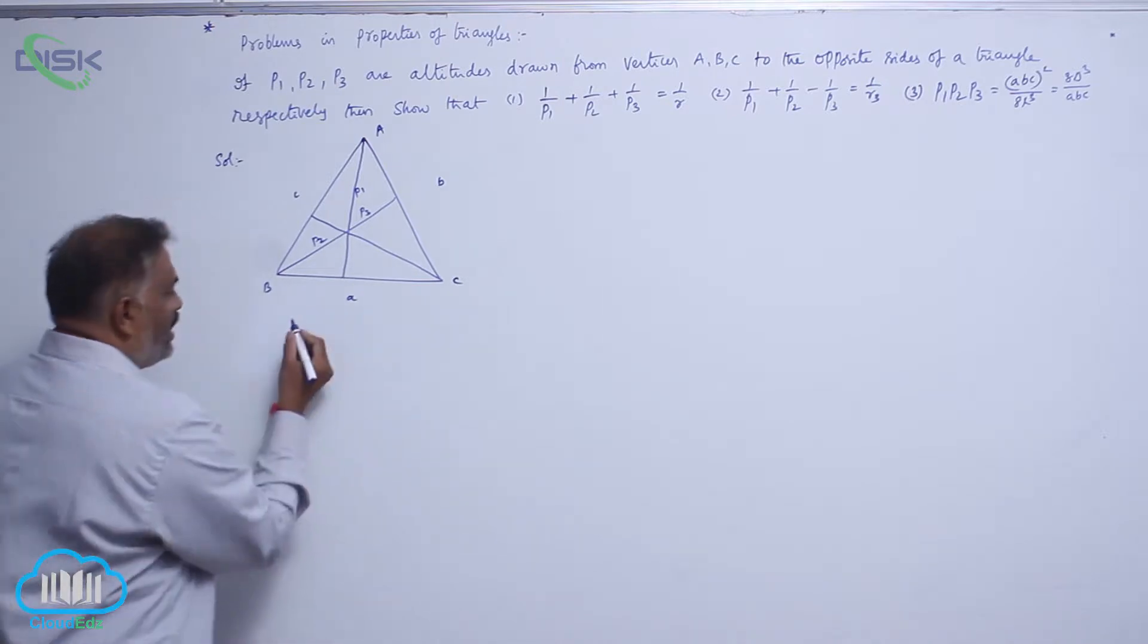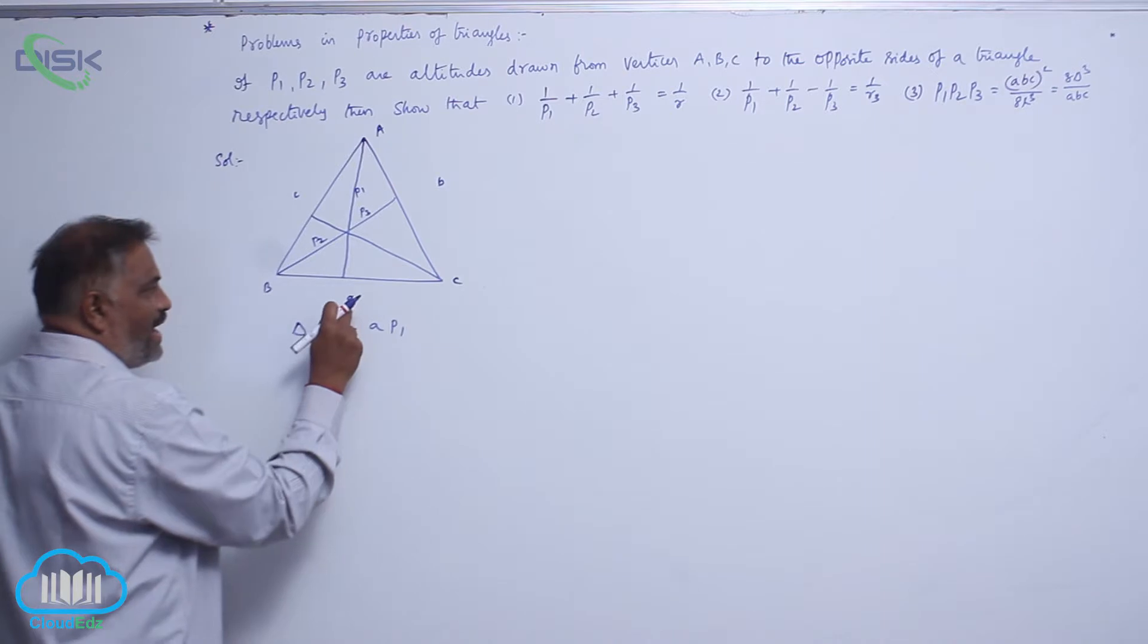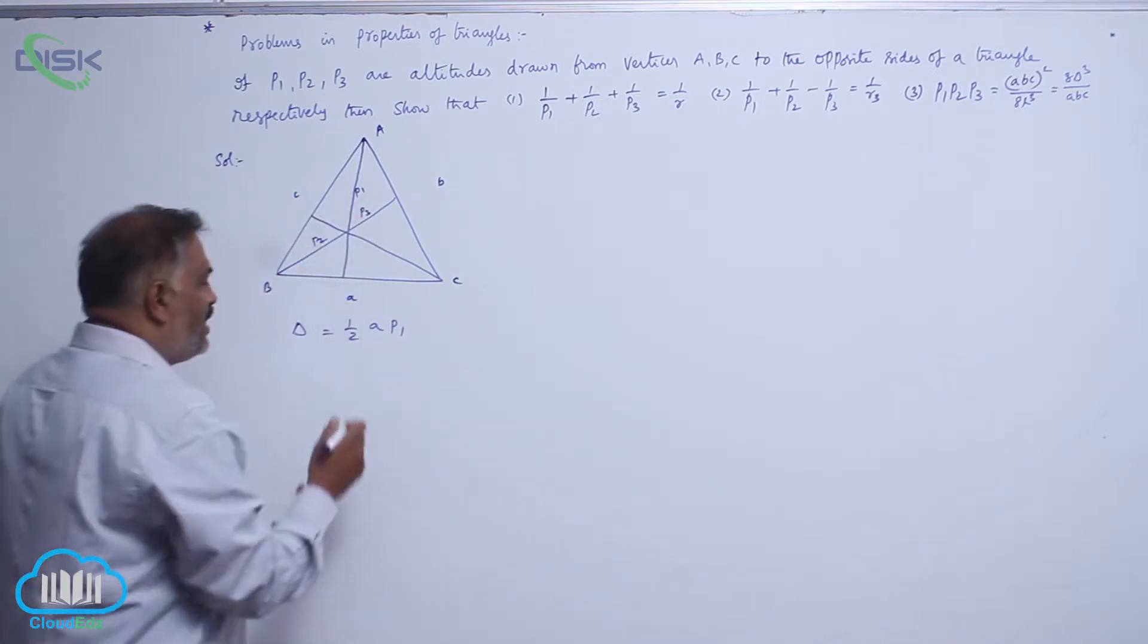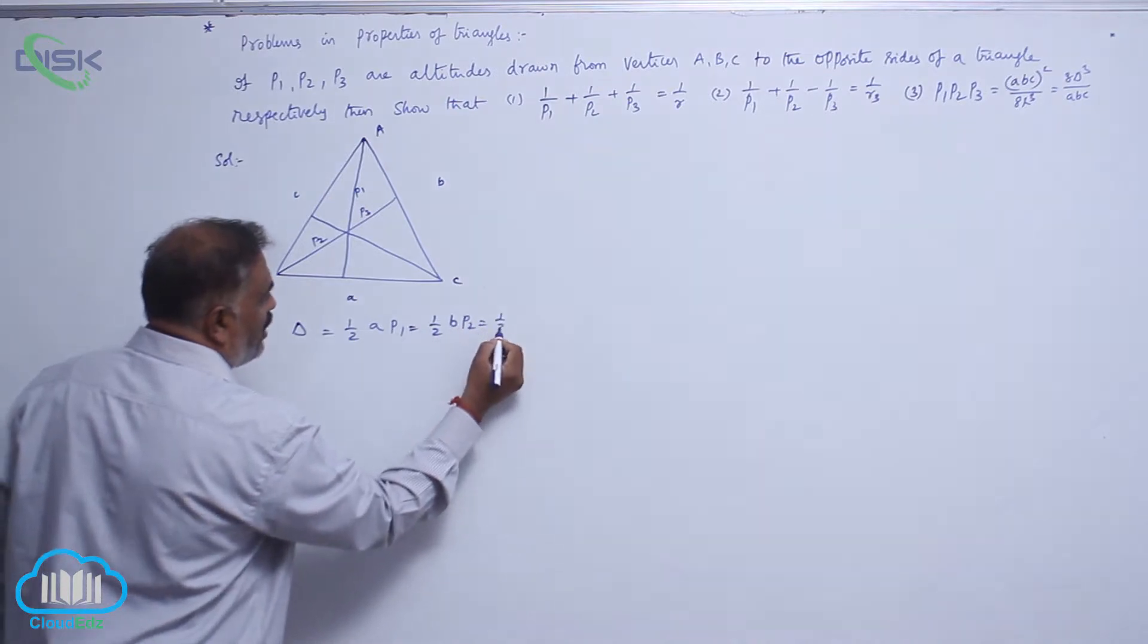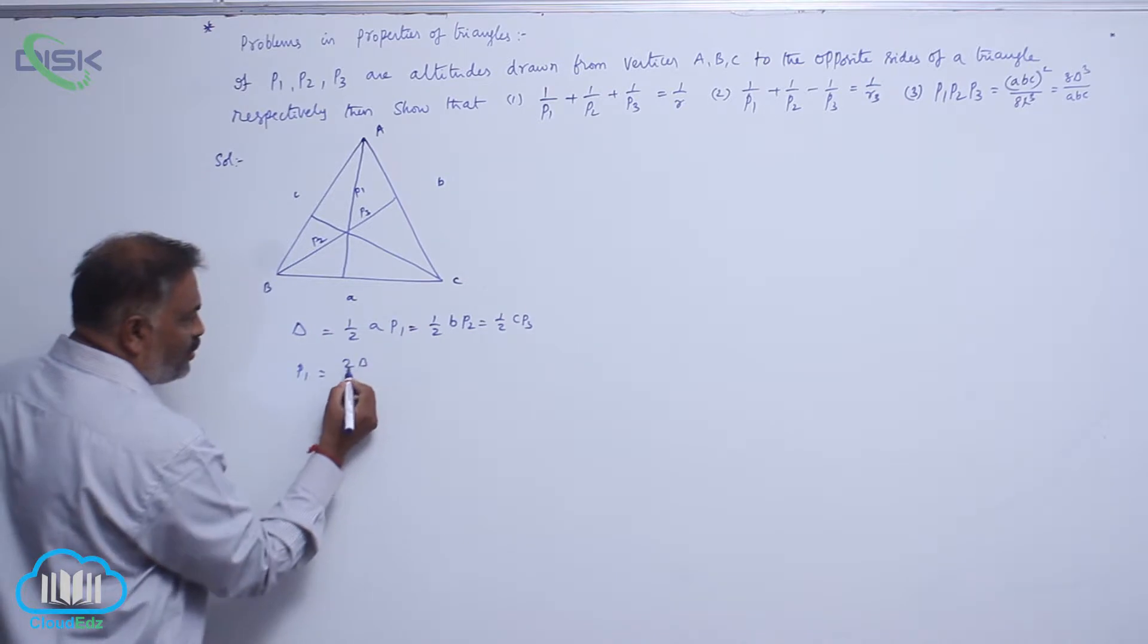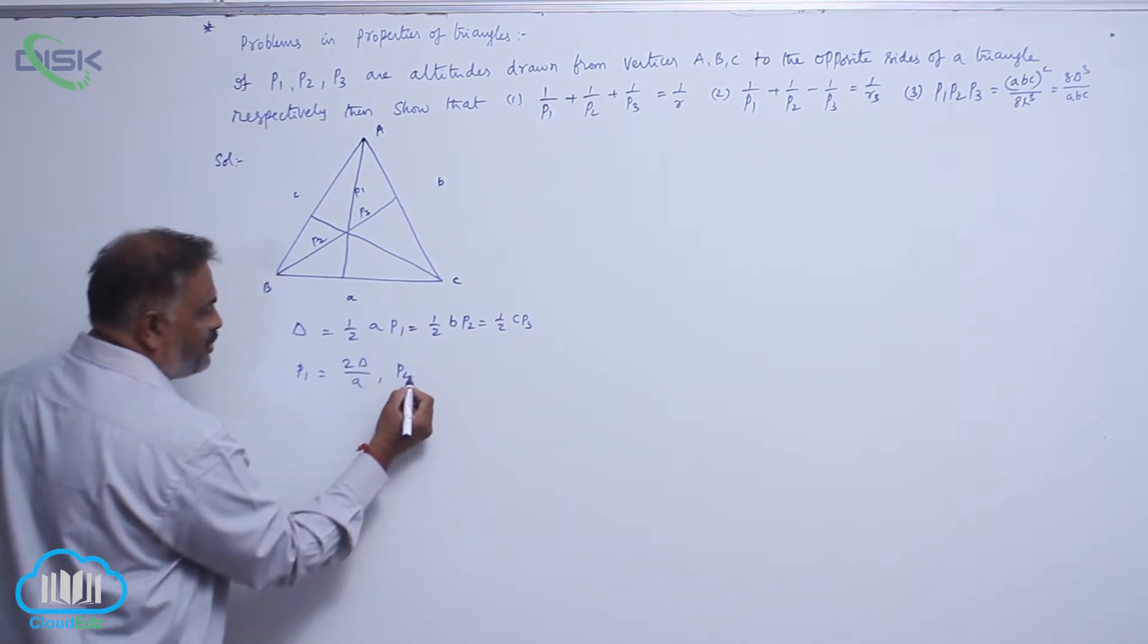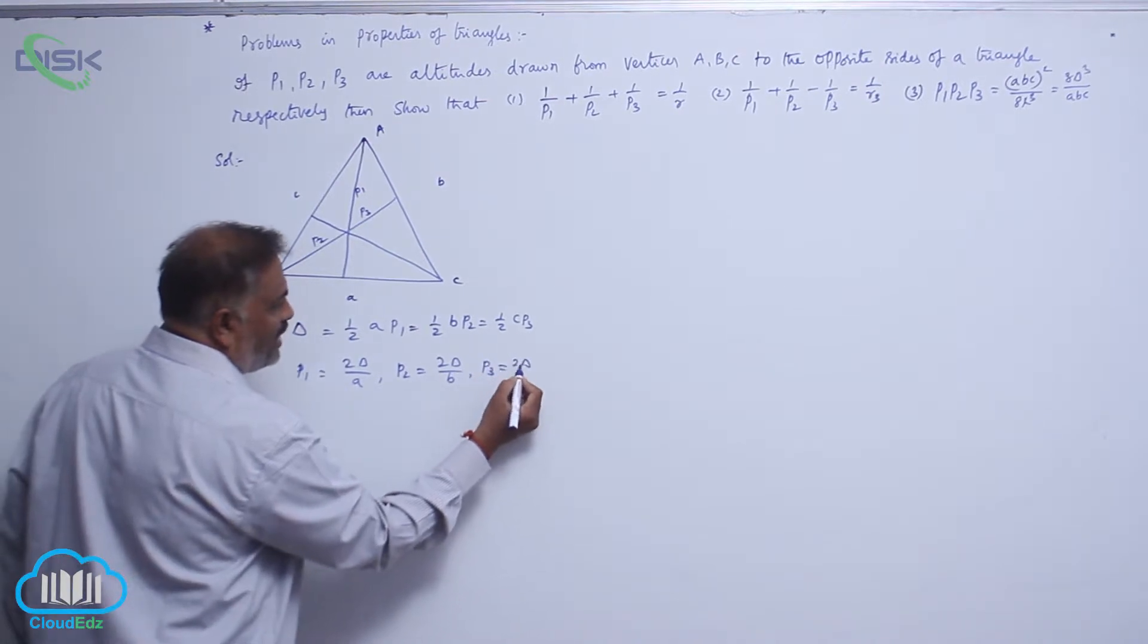We know that delta is equal to half A P1. If A is the base, P1 is the height, equivalent to half B P2 equals half C P3. This implies P1 equals 2 delta by A, P2 equals 2 delta by B, P3 equals 2 delta by C.